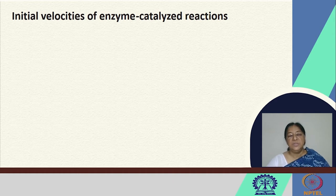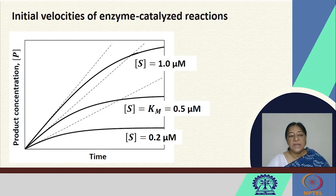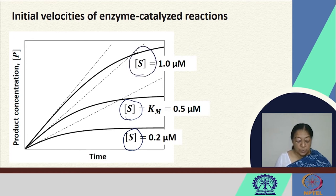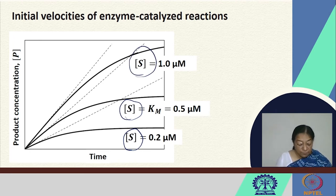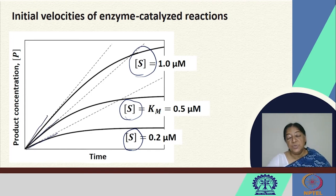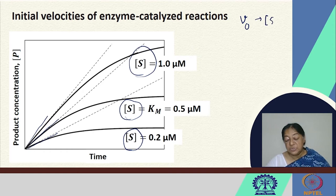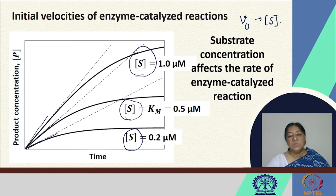Initial velocities of enzyme-catalyzed reactions vary with substrate concentration — the more substrate we have, the greater the product concentration. For each initial substrate concentration, we get a corresponding initial velocity. The substrate concentration will therefore affect the rate of the enzyme-catalyzed reaction.